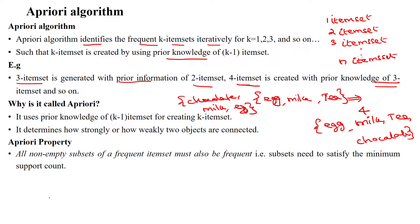Why is it called the A Priori algorithm? Because it uses the prior knowledge of the k-minus-1 itemset for creating the kth itemset, it is called the A Priori algorithm, which determines how strongly or weakly two objects are related to each other.